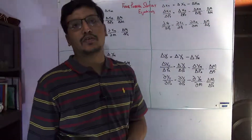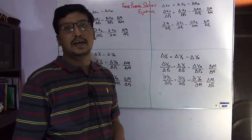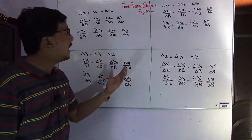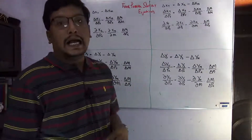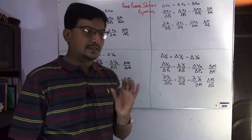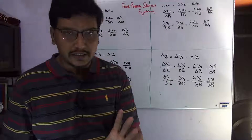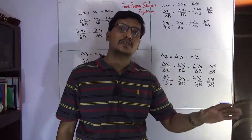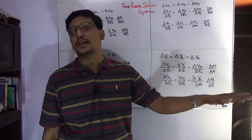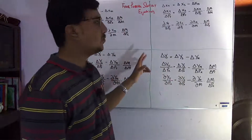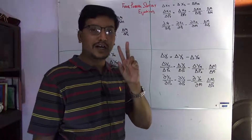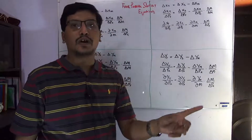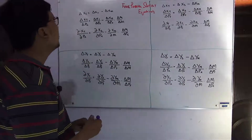Now we have to discuss the different cases. By using the same approach, we can derive the four possible Slutsky equations. Because we are discussing the two-commodity case, each commodity has its own price, and each commodity can be discussed with the effect of the cross price. So if there are two commodities, there will be two equations to derive with the own price impact, and then the same two equations will be derived from the cross price effect.